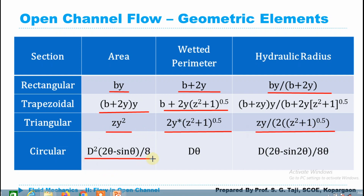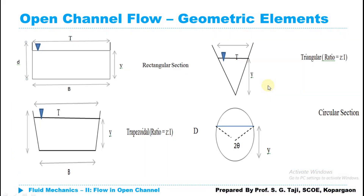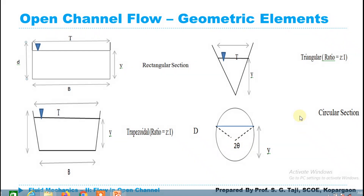For a circular channel section, the area can be calculated using: A = (D²/8)(2θ − sin 2θ), and the wetted perimeter = Dθ, where θ is the half-angle made at the center by the water surface. The hydraulic radius is the ratio of these two. θ is measured from the center of the channel to the water surface level, and this angle is theta.